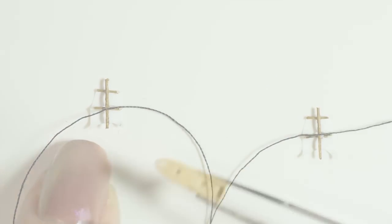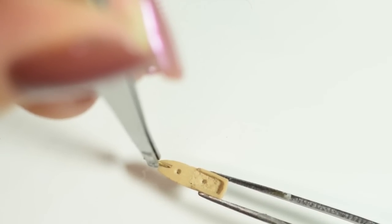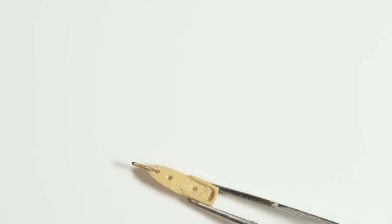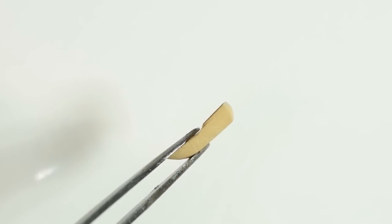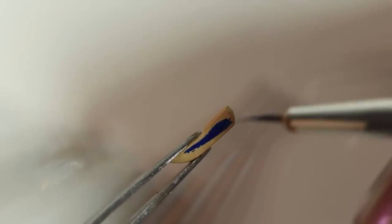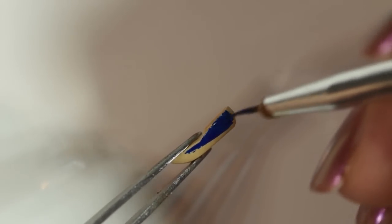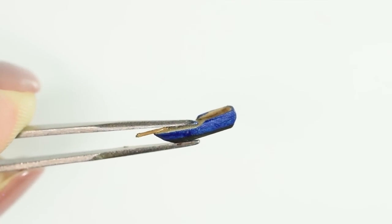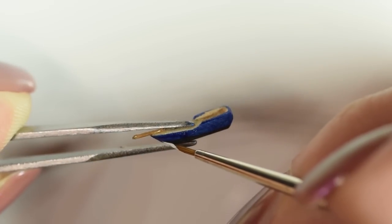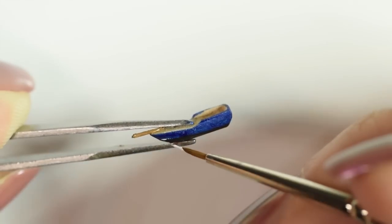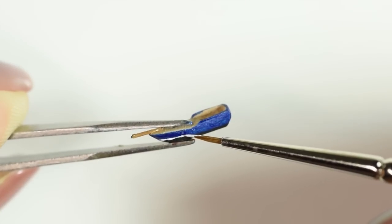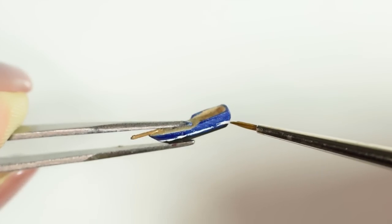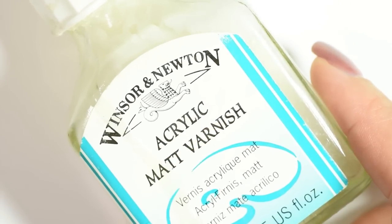Now that the sails are done, glue the front wire piece to the ship. Then get out the acrylic paints again and paint the bottom of the ship. Then seal it in with a matte varnish.